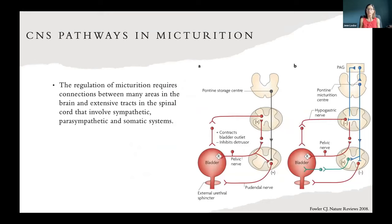Regulation of micturition or voiding requires connections between many areas between the brain and the spinal cord, involving the sympathetic, parasympathetic, and somatic systems. In normal urine storage, it's dependent on the spinal cord and the storage reflex is tonically facilitated by the brain, particularly the pontine storage center, where the bladder is normally for 99% of the time. When micturition occurs, it's dependent on the brain stem autonomic reflex and involves the midbrain, periaqueductal gray matter, and the pontine micturition center. The PAG is thought to be central in regulating micturition.